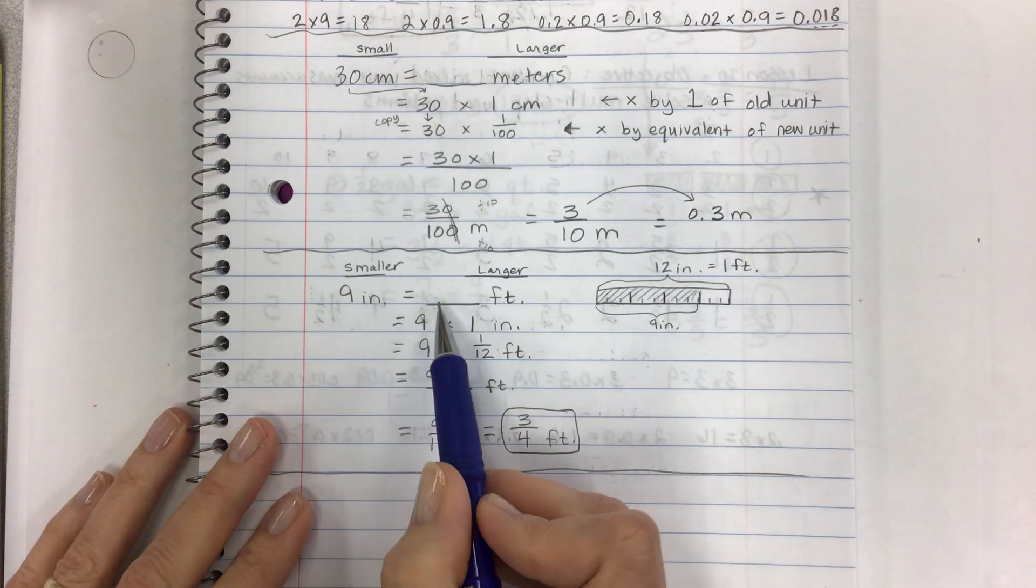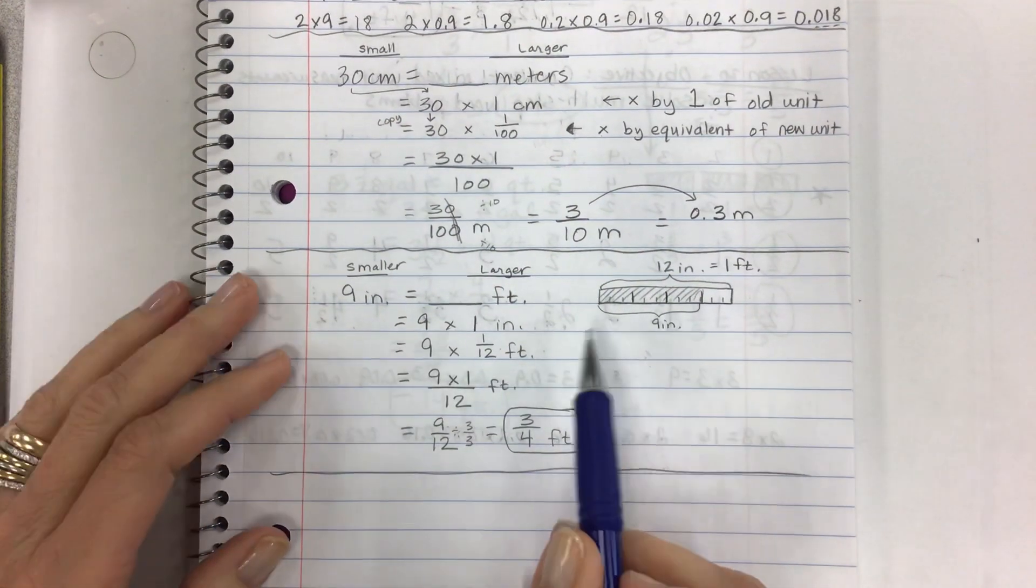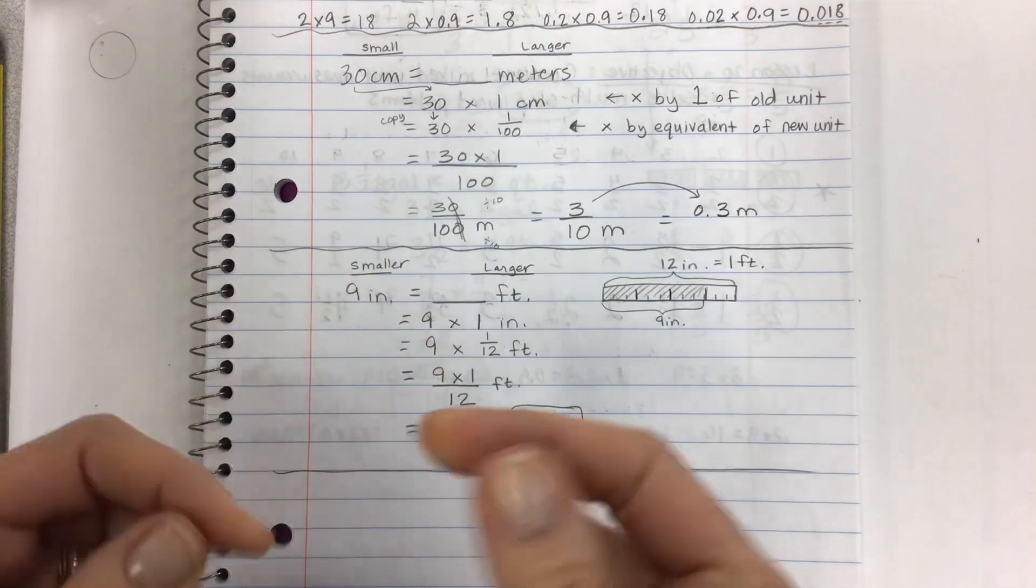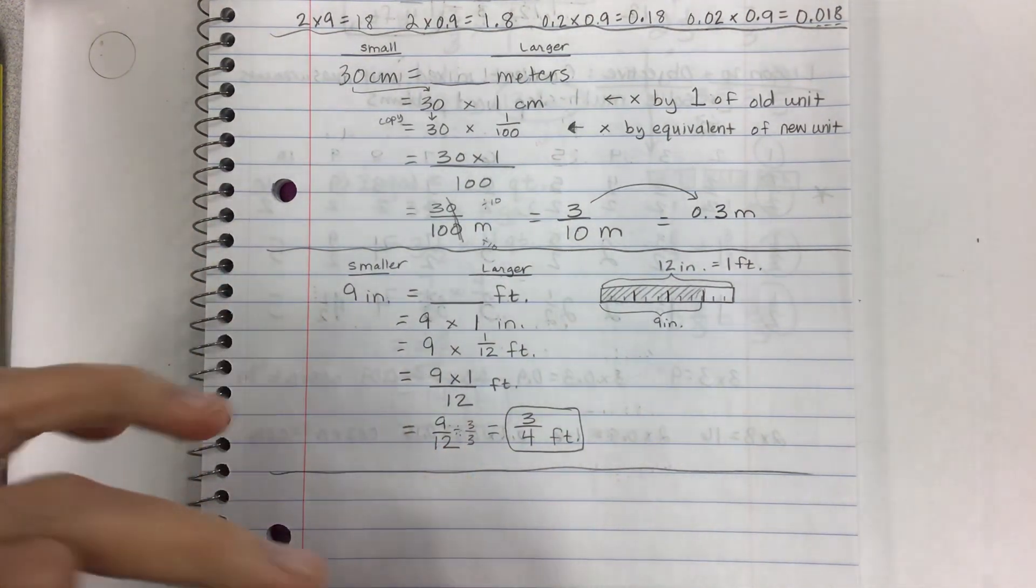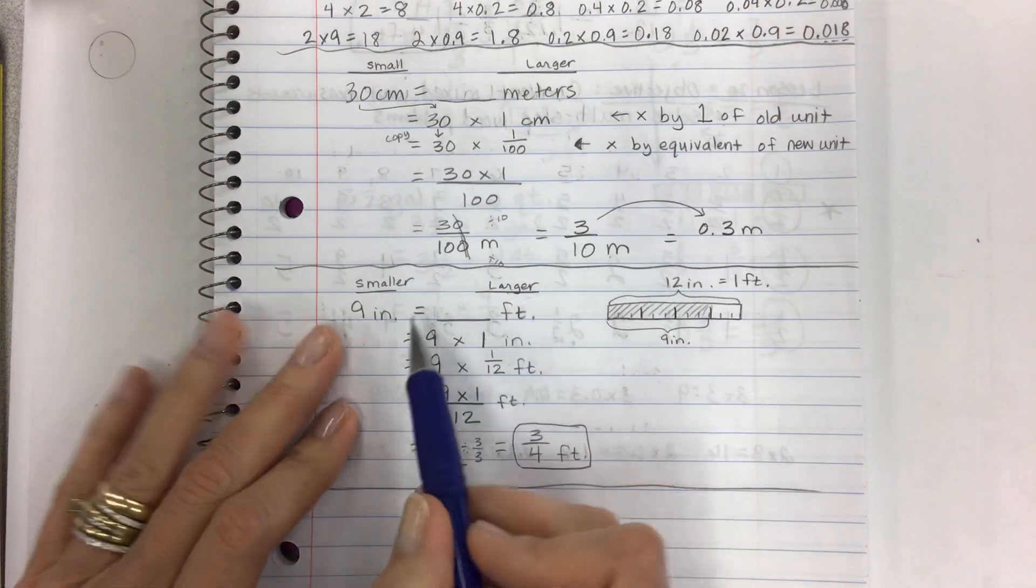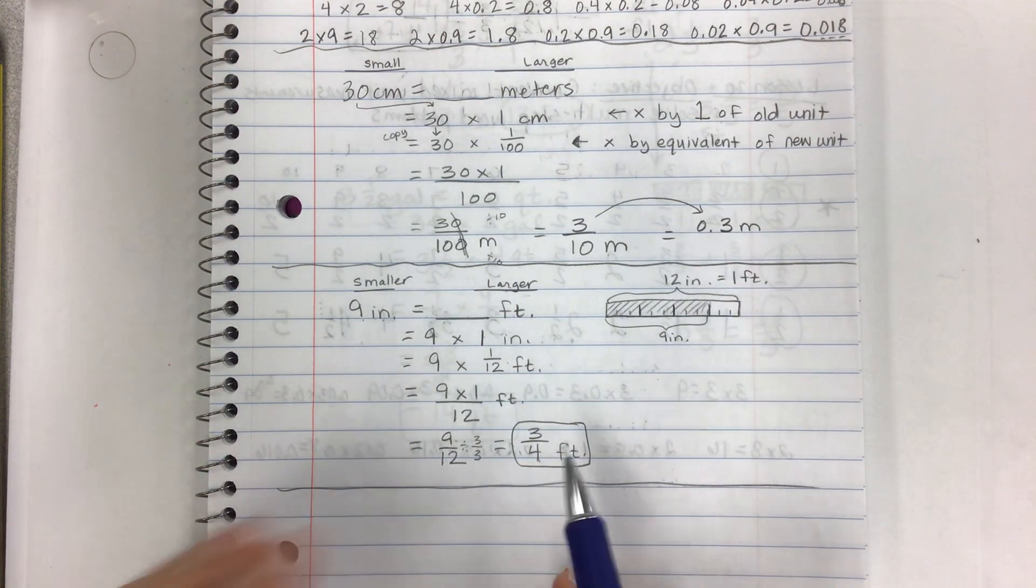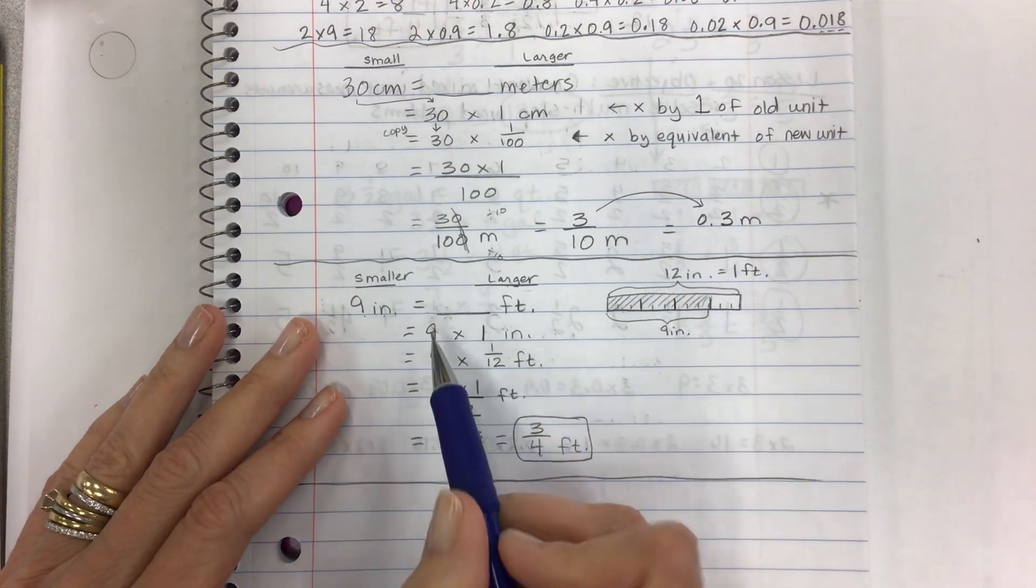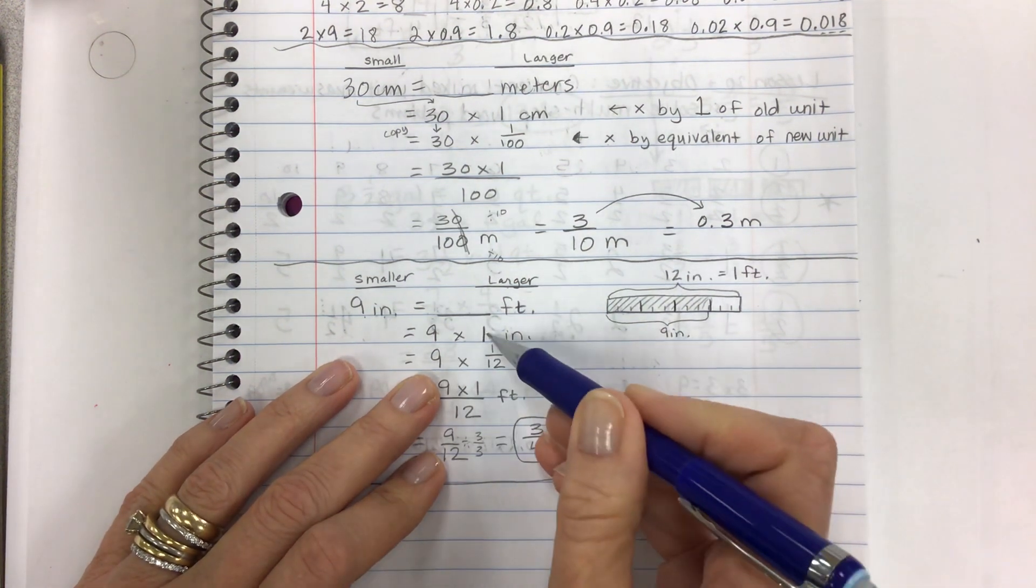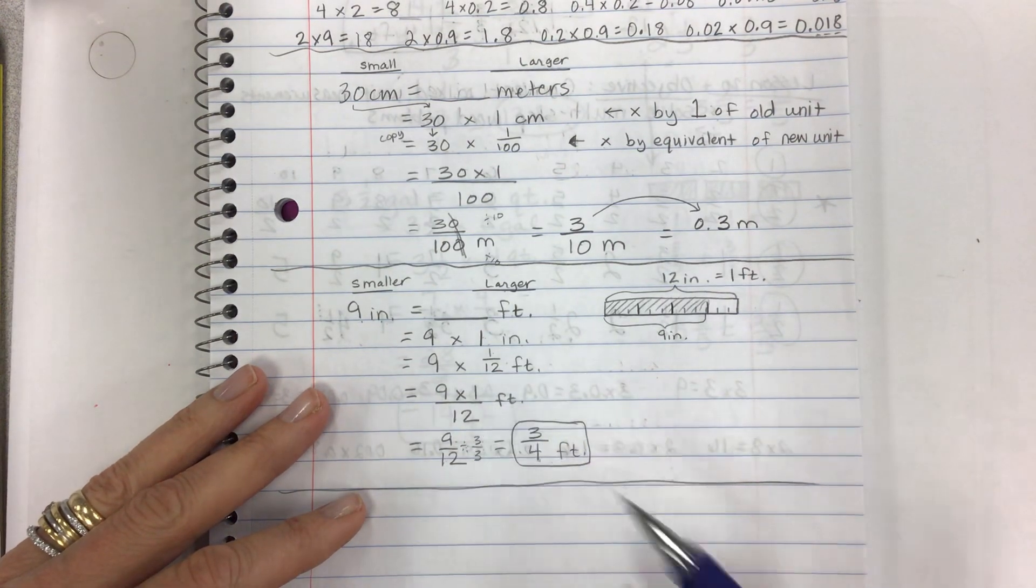Another sample problem, 9 inches equals how many feet? When you get on a test, you're going to have to pay attention on your own. Am I going from inches, which are little tiny, they're about as long as my thumb here, to feet, which, you know, a ruler, like 12 inches. So if I only have 9 inches, that's less than a foot. So it makes sense that my answer is not even going to be 1. So think logically about what type of answer you're getting. And again, copy 9 times 1 of the old, 9 times the equivalent of the new. So 1 inch equals 1 twelfth of a foot. So instead of multiplying by whole numbers like we did last time, we're multiplying by fractions.